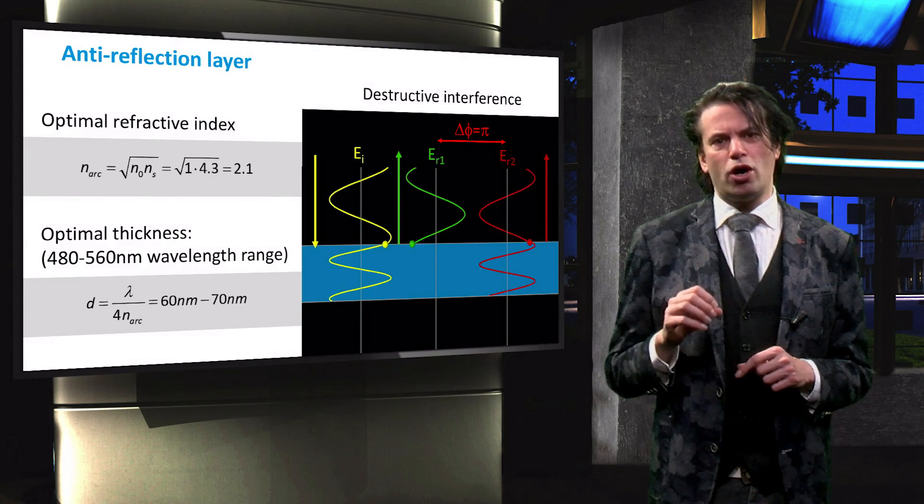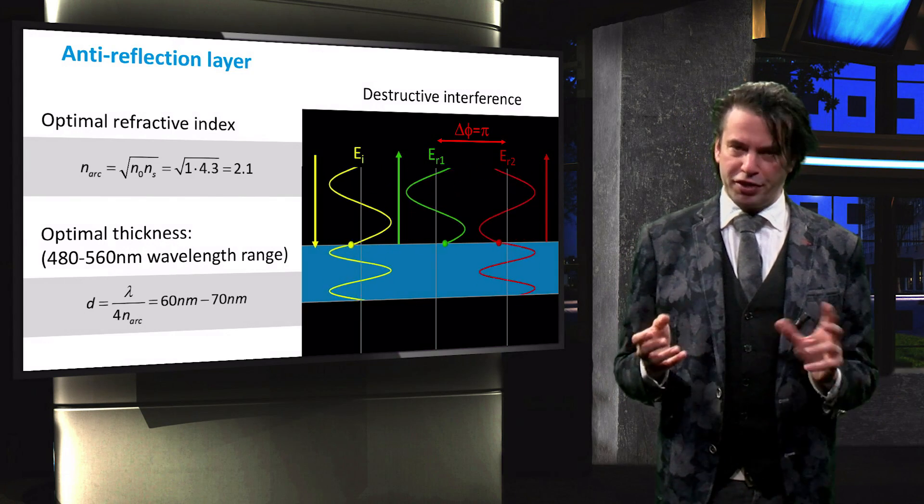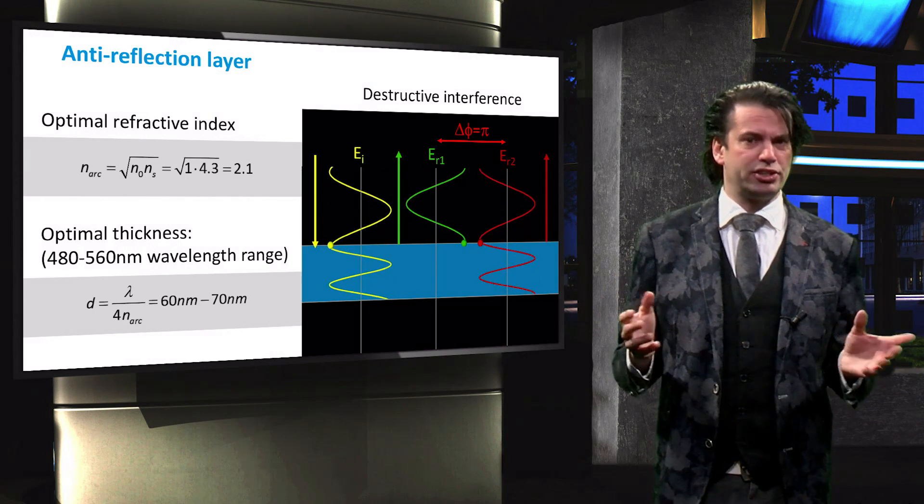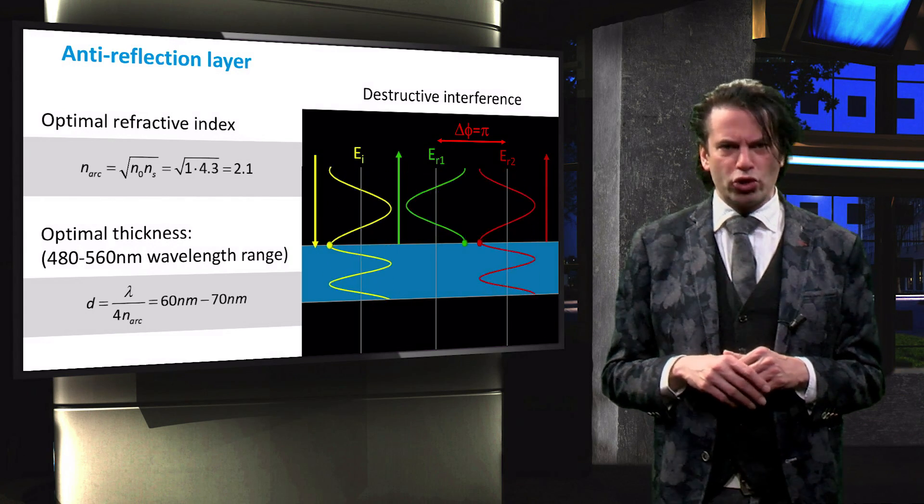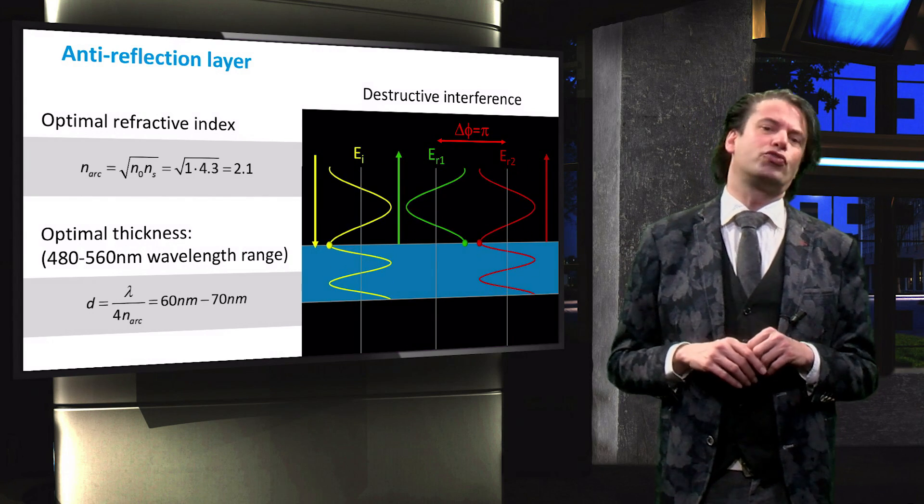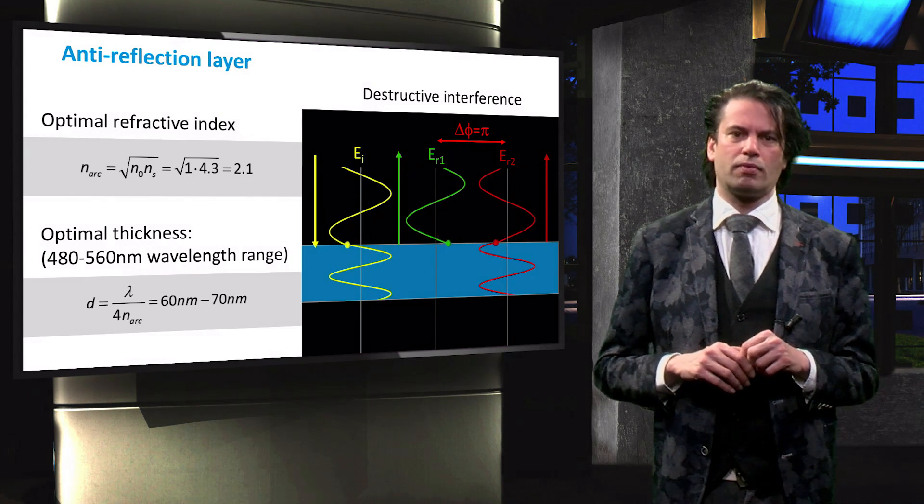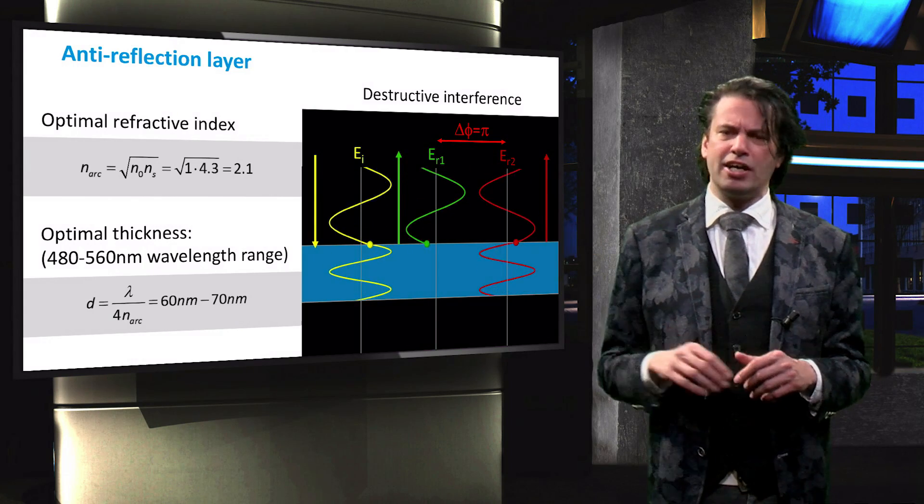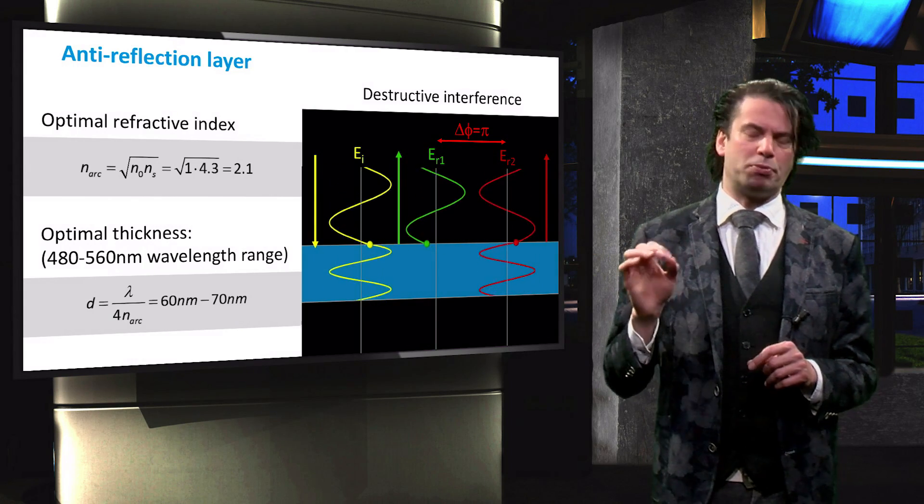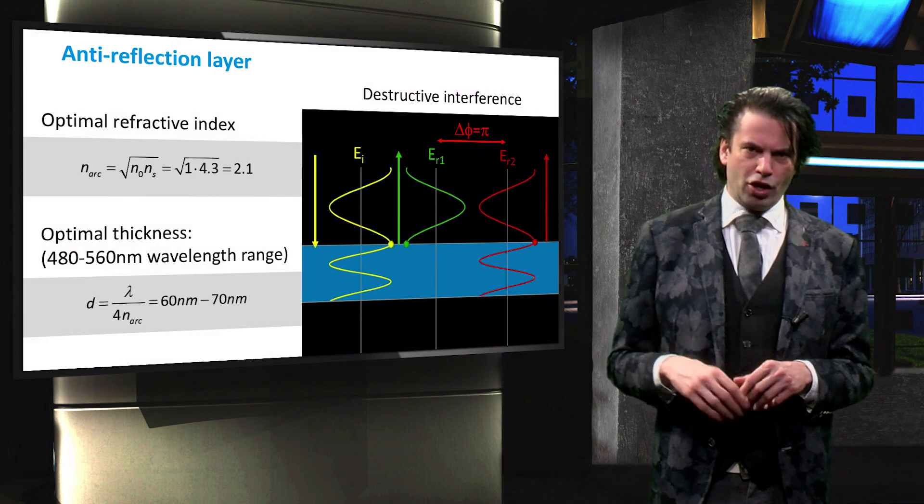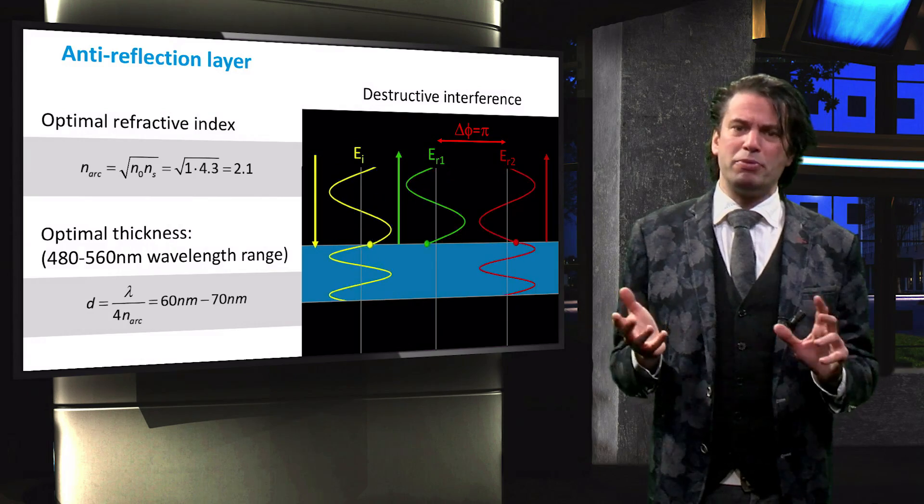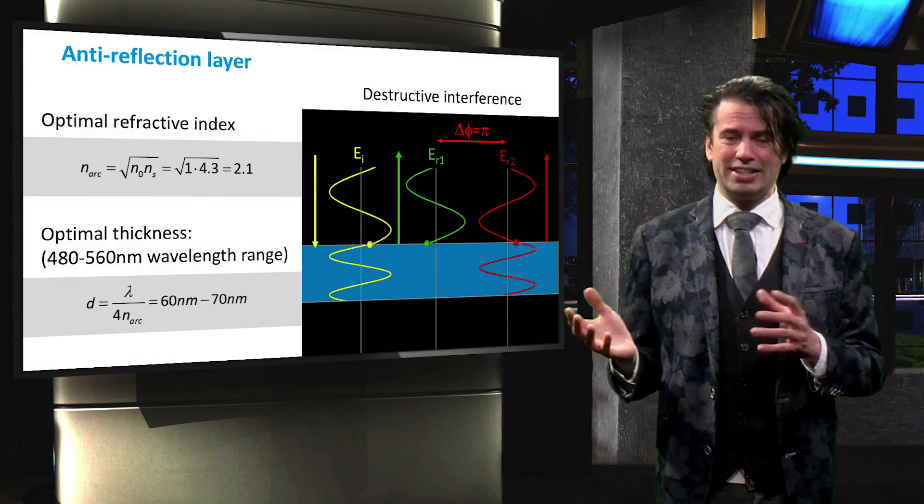Let's say we want to optimize the destructive interference for the 480 to 560 nm wavelength range, the spectral range in which the solar spectrum has the highest values for the spectral power density. We can now use the relation we found on the previous slide to calculate the optimal thickness. For optimal performance, the anti-reflection film thickness should be between 60 and 70 nm.